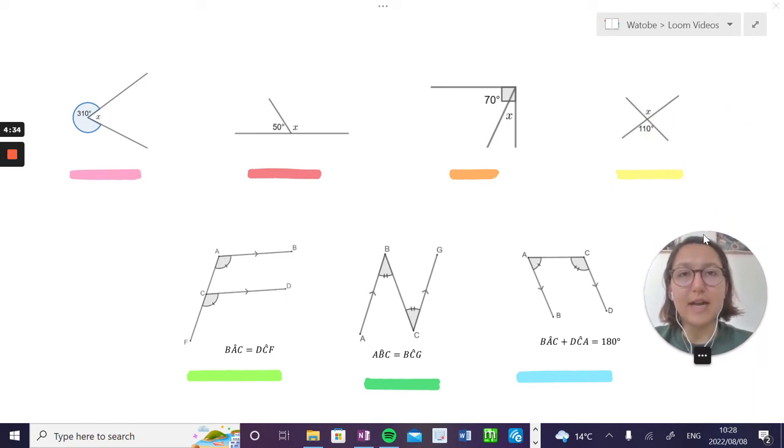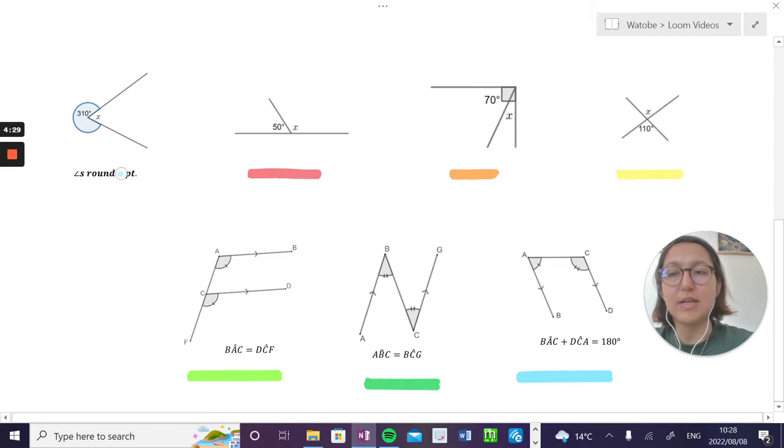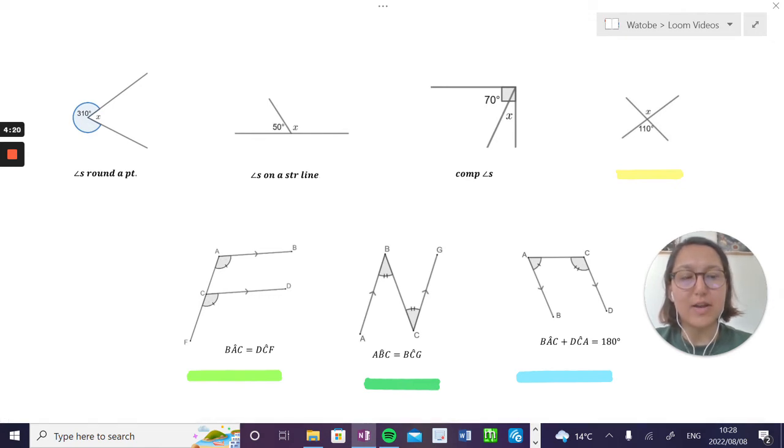The first thing we're going to look at is angles around a point, one of our first geometric reasons that we need to know. Then we're going to look at angles on a straight line and complementary angles. These sort of go hand in hand, but we're going to chat about those lines and the angles we create in these lessons.